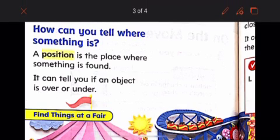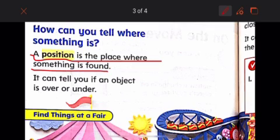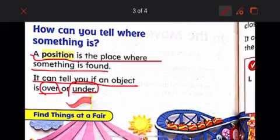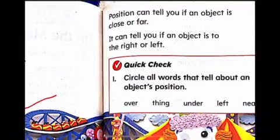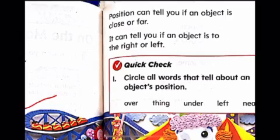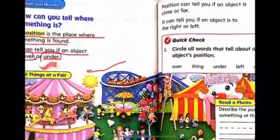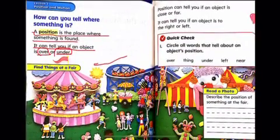How can you tell where something is? A position is the place where something is found. I can tell you if an object is over or under, close or far, or to the right or to the left. How would you describe where you are sitting? Umar, can you tell me where you are sitting right now?